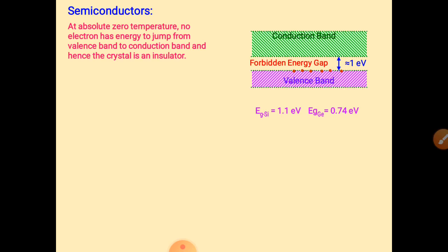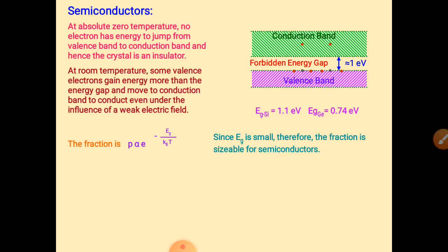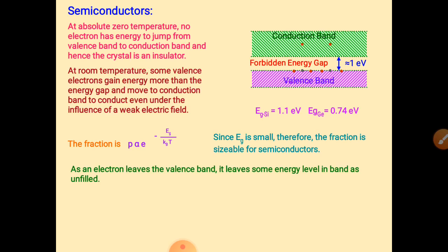For insulators, the forbidden energy gap is much larger. Not only temperature but other sources — such as an electric field — can move electrons from the valence band to the conduction band in a semiconductor. The fraction of electrons making this transition is proportional to e raised to minus Eg over kbT.